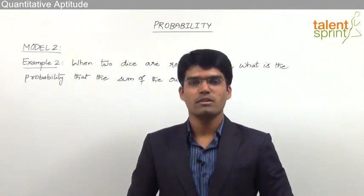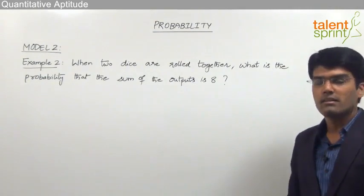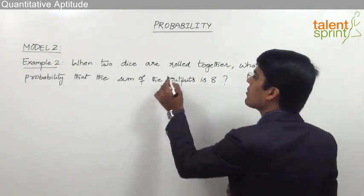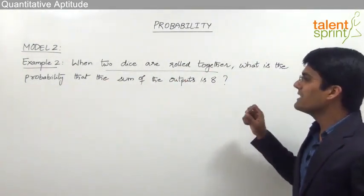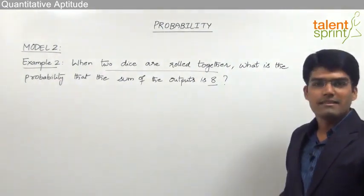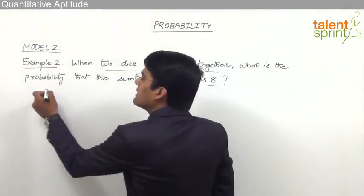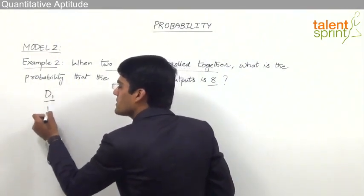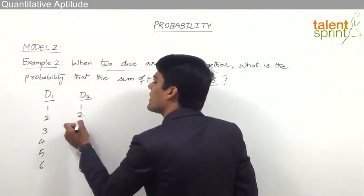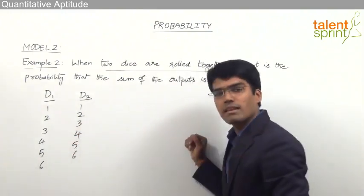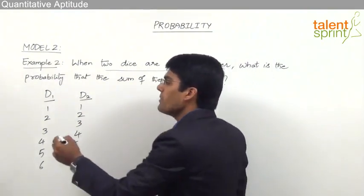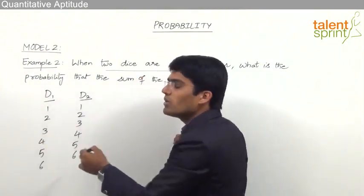Let us take the second example from model 2. When two dice are rolled together, what is the probability that the sum of the outputs is 8? Dice 1 has 6 possible outcomes: 1, 2, 3, 4, 5, 6. Similarly, dice 2 also has 6 possible outcomes. When two dice are rolled together, we get a total of 6 × 6 = 36 outputs — every output of dice 1 combined with every output of dice 2.